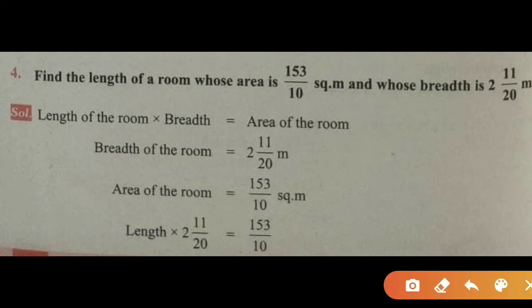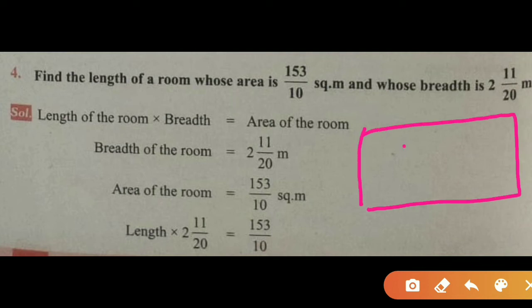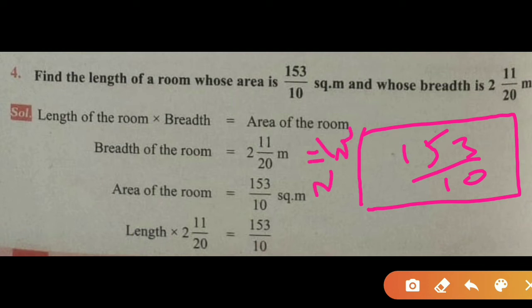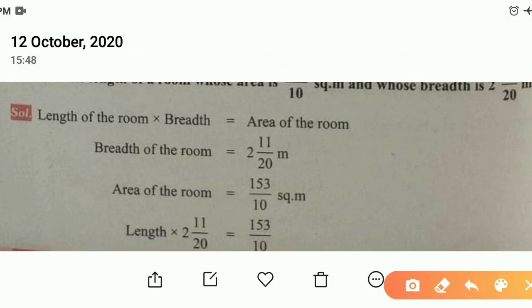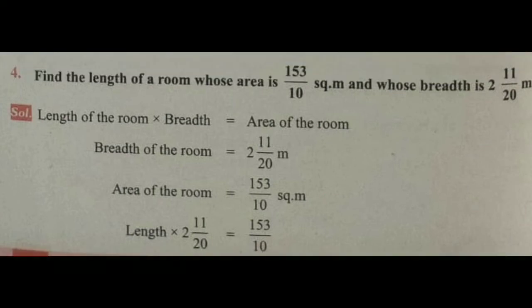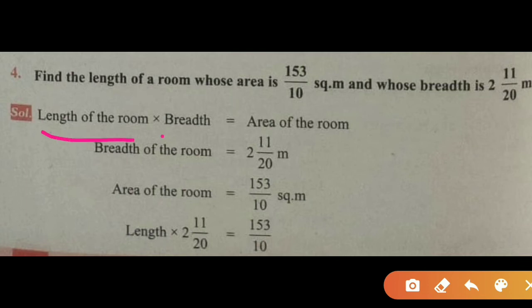The fourth question: find the length of a room whose area is 153 divided by 10 square meters and whose breadth is 2 and 11 by 20 meters. The room is in the shape of a rectangle. The total area is 153 divided by 10 square meters, and the breadth is 2 and 11 by 20 meters. They are asking for the length of the room. The formula for area of a rectangle is length into breadth.